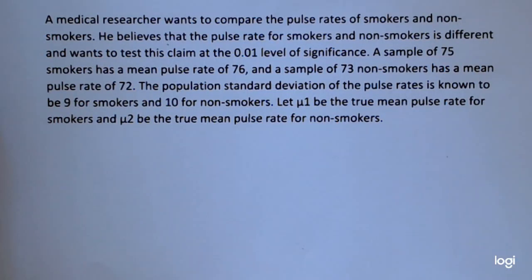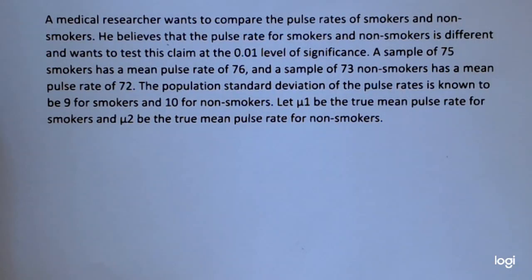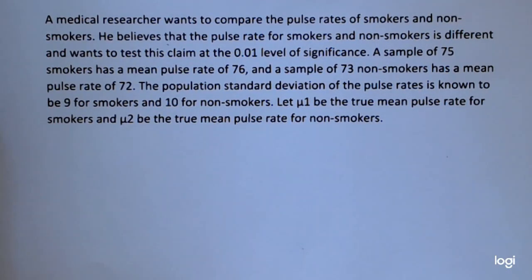A sample of 75 smokers has a mean pulse rate of 76, and a sample of 73 non-smokers has a mean pulse rate of 72. The population standard deviation of the pulse rates is known to be 9 for smokers and 10 for non-smokers. Let mu sub 1 be the true mean pulse rate for smokers and mu sub 2 be the true mean pulse rate for non-smokers.